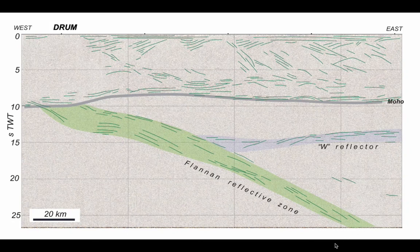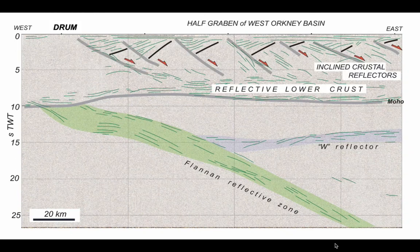Although perhaps it should be called the WTF reflector — what is this zone five seconds below the Moho? Is the W reflector actually the base of the crust, and the Moho something actually within the continental crust? Well, we'll leave that hanging. Let's put the rest of the interpretation back — and that's what we learned from DRUM.